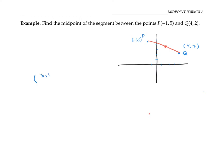we're going to use x1 plus x2 over two and y1 plus y2 over two, where this first point has coordinates x1, y1 and the second point has coordinates x2, y2.